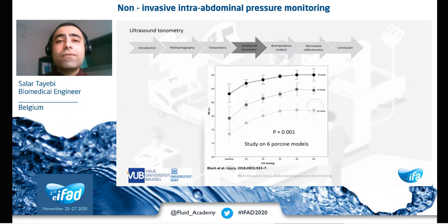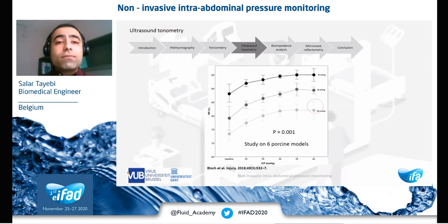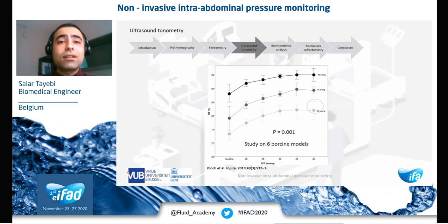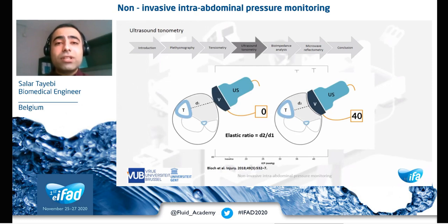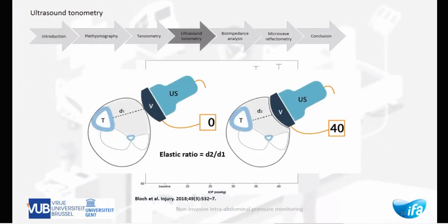As you see here, when intracompartmental pressure goes up, the elastic ratio increases as well, meaning the ratio of the compartment radius with and without external pressure increases as a function of pressure. When compartmental pressure increases, D2 in this figure becomes larger, and this increase is greater than D1, which results in greater elastic ratios. By this approach, we can use ultrasound tonometry to monitor abdominal pressure.